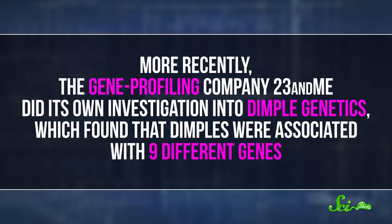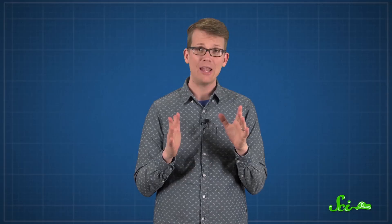More recently, the gene profiling company 23andMe did its own investigation into dimple genetics, which found that dimples were associated with nine different genes. Complicating matters even more is the fact that dimples can come and go over time.